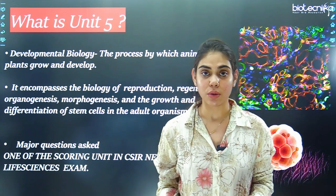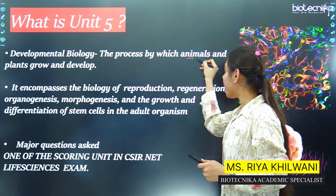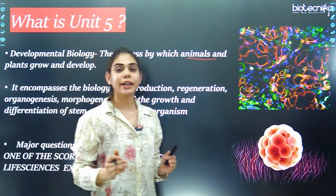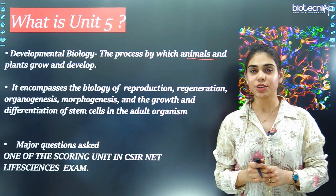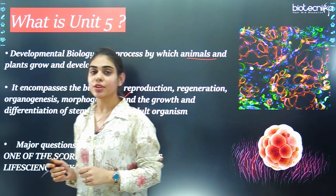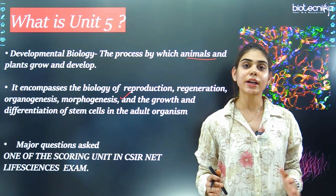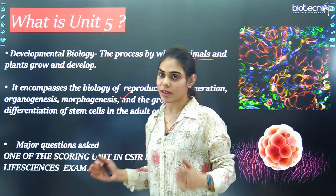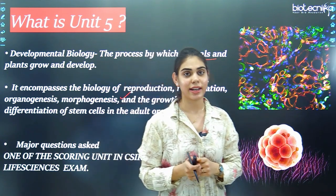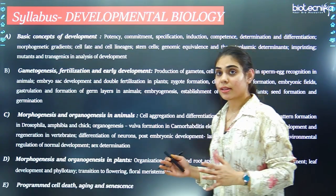The very first question is: what is Unit 5 about? This unit is all about developmental biology. It is a process by which animals and plants develop and grow. What is included in this unit? It includes the biology of reproduction, regeneration, organogenesis, morphogenesis, and the growth and differentiation of the adult organism. Most of the questions asked every year come from this unit, so it is recorded as one of the most important units under CSIR NET Life Sciences.